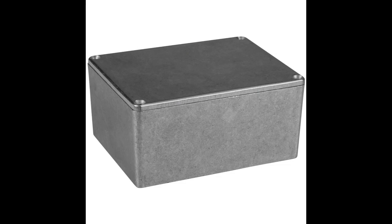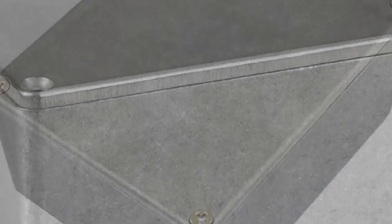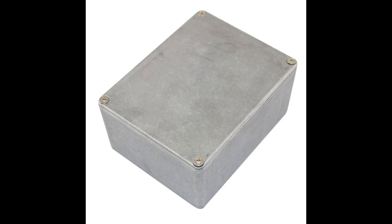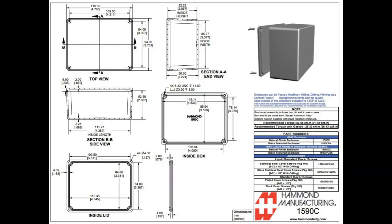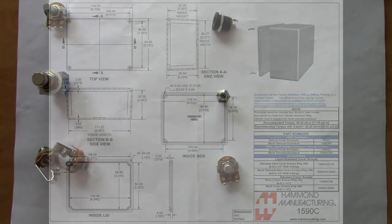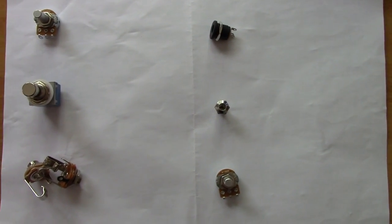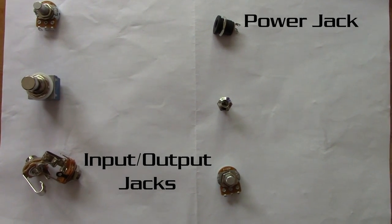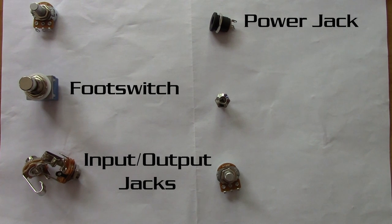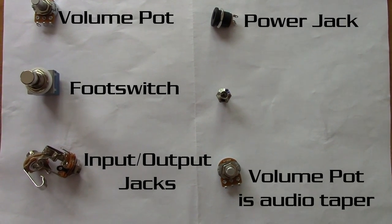Before we go on to the kit components let us first take a look at the preparation of the enclosure. If you are like me and did not order a pre-drilled enclosure then you will have to drill the holes yourself in your own enclosure. Holes will need to be drilled for the input output jacks, the AC power jack, the foot switch, the volume pot and the LED housing.